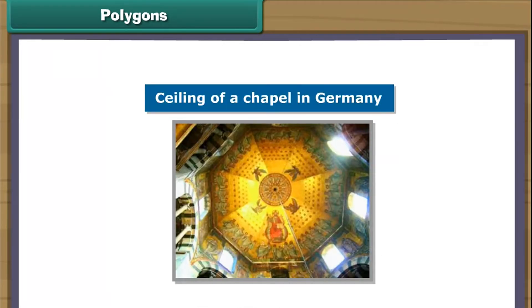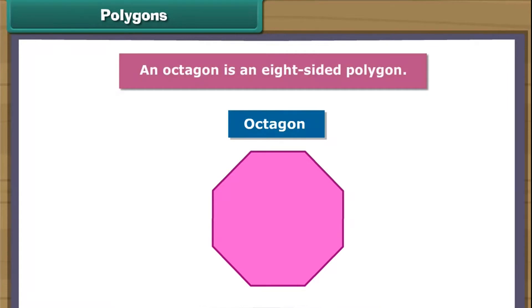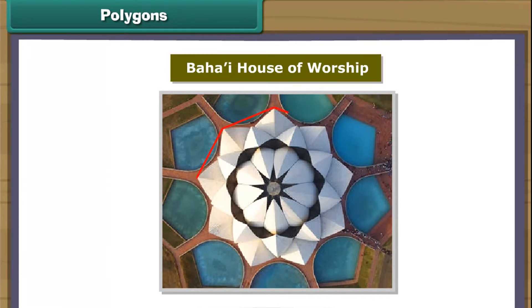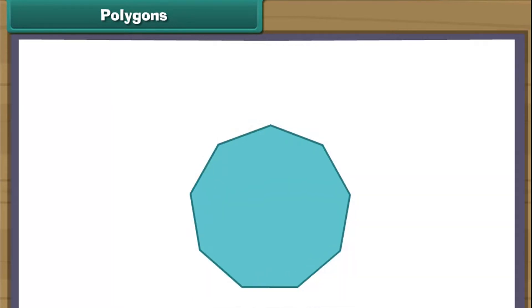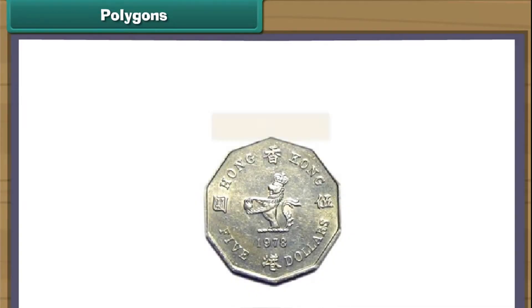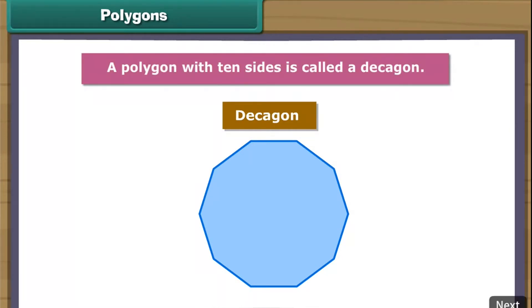This is the image of the ceiling of a chapel in Germany. It has eight sides. An octagon is an eight-sided polygon. This is the Bahai house of worship. All Bahai houses of worship have nine sides. A nonagon is a polygon made up of nine line segments. Here is an old five-dollar coin from Hong Kong. It has ten sides. A polygon with ten sides is called a decagon.